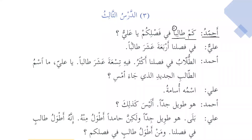Kam taaliban fi faslikum ya Aliyu — how many students are there in your classroom, oh Ali? Fi faslina — in our classroom — arba'ata 'ashara taaliban, there are 14 students. Now we have learned that the numbers from 11 to 19 — exception being number 12 — they are mabniyun 'alal fatah. So we can see arba'ata 'ashara taaliban.